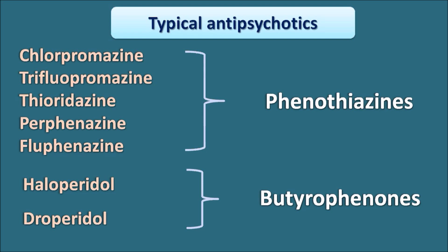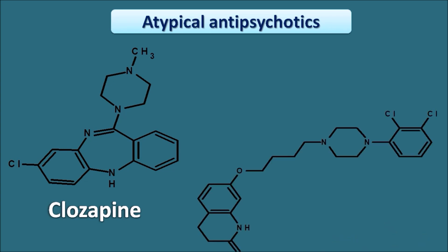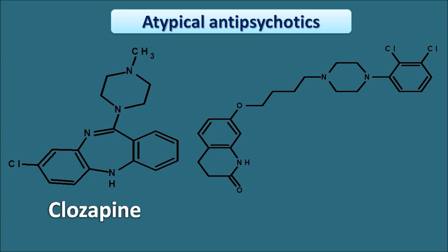Typical antipsychotics are chemically related, and their chemical structure has some relation to their binding at dopamine receptors. In contrast, atypical antipsychotics are a chemically diverse group. For example, clozapine has a dibenzodiazepin ring system — two benzene rings fused with a seven-membered ring containing two nitrogens.